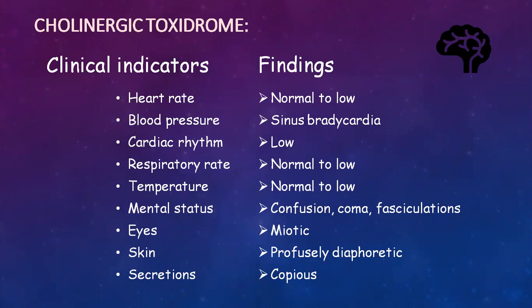In the cholinergic toxidrome, the heart rate will be normal to low, there will be low blood pressure (hypotension), cardiac rhythm will be sinus bradycardia, respiratory rate normal to low, and temperature normal to low. The mental status of the patient will be confusion progressing to coma, and fasciculations can be present. Eyes: pupils will be miotic (constricted). Skin is profusely diaphoretic and secretions are copious.